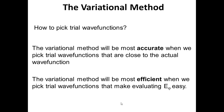The variational method will also be most efficient when we pick trial wave functions that make evaluating the energy easy, because we have to do that over and over each time we adjust alpha. In actual implementation on computers, these two aspects are balanced: we don't pick the very best wave function if it makes the energy expression hard to evaluate, but we also don't pick a simple function just because it's easy — that simple function might be too far from the true solution to ever get very close. We take both ideas into account when applying the variational method to systems of interest.